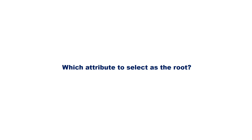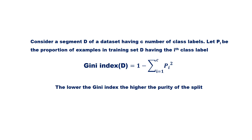The first question to be answered is which attribute to be selected as the root node. To select the best attribute, the CART algorithm uses Gini index as a metric. The Gini index of a dataset with c number of classes is given as 1 minus the summation over i equal to 1 to c of pi squared, where pi is the proportion of examples in the training set having the ith class label. Let us now compute the Gini index of all four attributes.